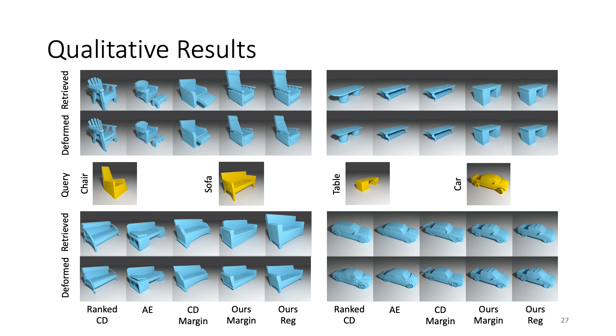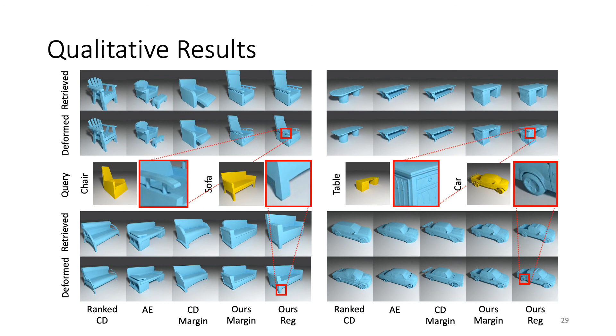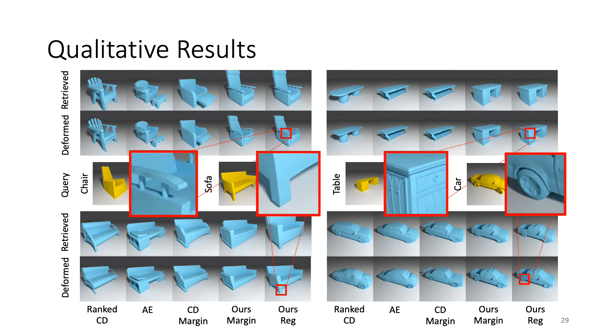We further show some qualitative results. Our network is able to retrieve models that better fit after deformation, despite having large geometric distances initially. Notice that the back part of the chair and the thick seat of the sofa, which are attributes that are not identical to the query. Our network is also able to retrieve a sofa with legs and a car with a trunk, as present in the targets. Moreover, our retrieval plus deformation approach also allows us to preserve fine details of the source models post-deformation.